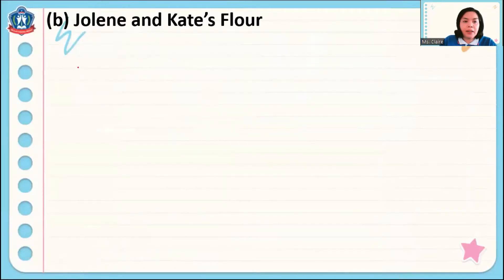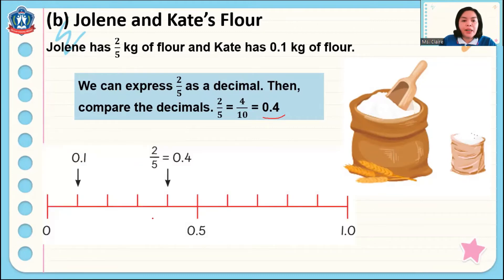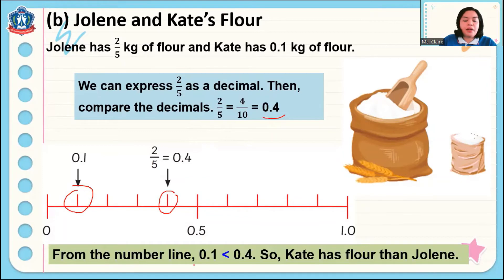Another problem: Julian has two-fifths kilogram of flour, and Kate has 0.1 kilogram of flour. When we compare these amounts, we need to change one of them to decimal or both to fractions. So we change two-fifths into decimal, which equals 0.4. On the number line, 0.4 is here and 0.1 is here. Julian's flour is heavier. From the number line, 0.1 is less than 0.4, so Kate's flour is lighter than Julian's. Julian has 0.4 kilogram.